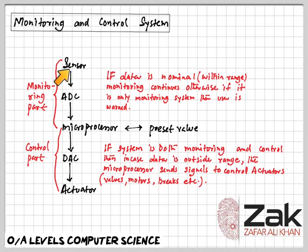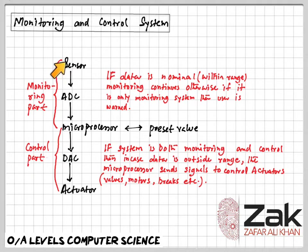For example, an analog clock requires the user to look at the hands on the clock face. The areas swept out by the hands allow the number of hours and minutes to be interpreted.